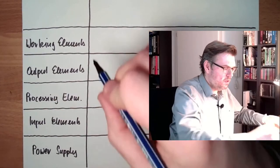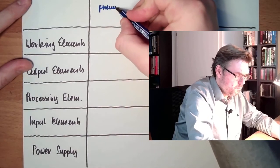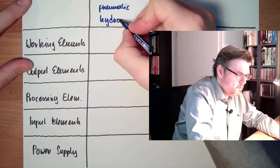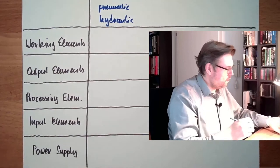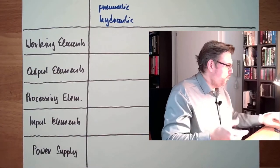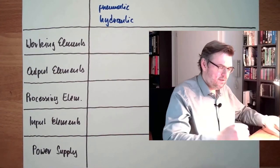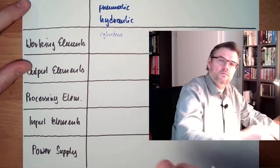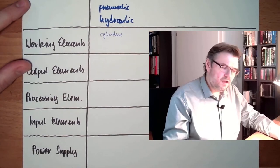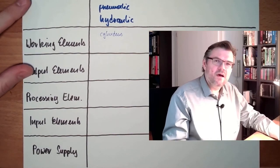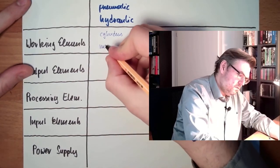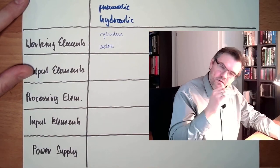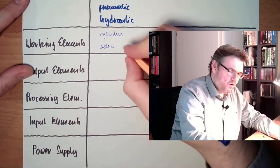So we're talking about pneumatic or hydraulic. What are typical working elements? Cylinders. Typical working elements, double acting, single acting, however, there are also motors, air motors, hydro motors, and in air there are also turbines.